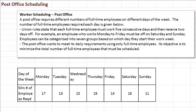This example is about post office scheduling — figuring out how many employees to schedule on different days of the week. The workload at this post office varies depending on the day of the week, so some days they need more people and other days fewer. The table here tells you how many employees are needed according to the day of the week. On Mondays they need at least 17 people, on Tuesdays at least 13, and so forth. These are the minimum numbers of employees required.